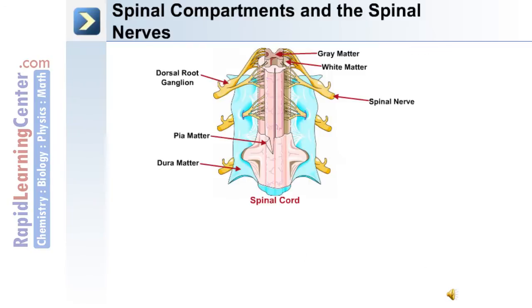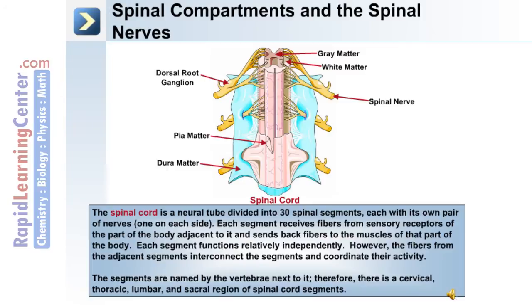This image depicts a spinal cord including the dura mater and pia mater coverings, the gray matter and white matter. Also shown is the spinal nerve; the dorsal root ganglion is attached to the spinal nerve, as well as the ventral root.